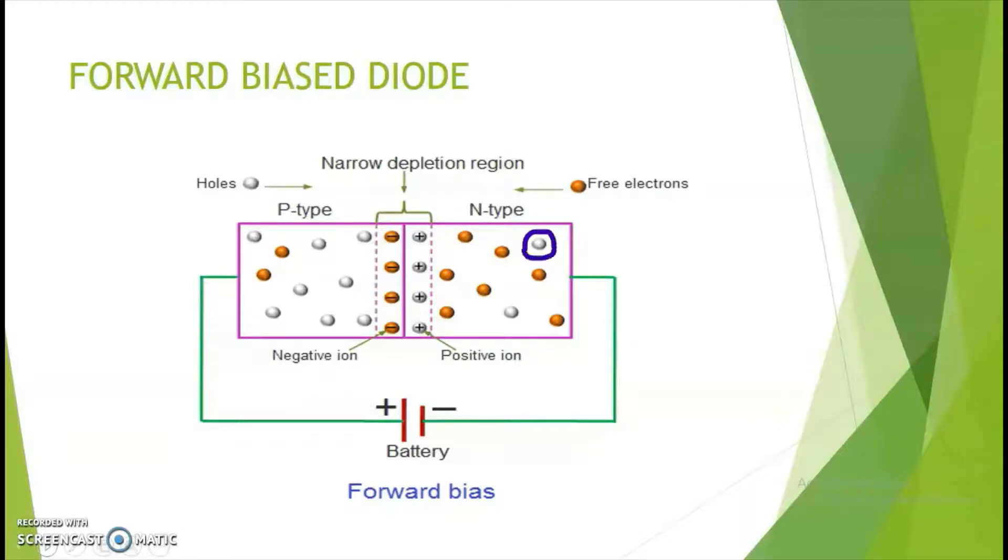Once the holes reach the N-type, it is attracted by the negative terminal of the battery. The circuit is completed like this when the charge carriers move and it contributes towards current flow.